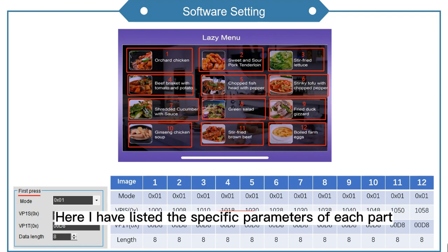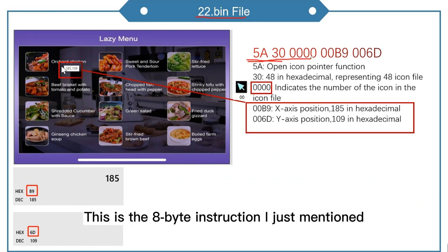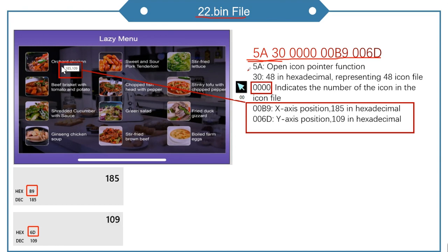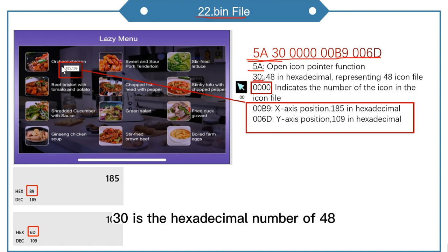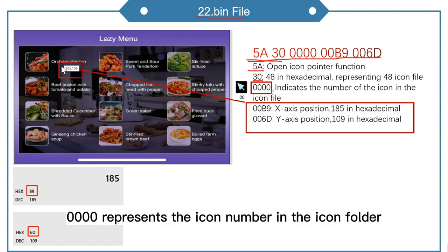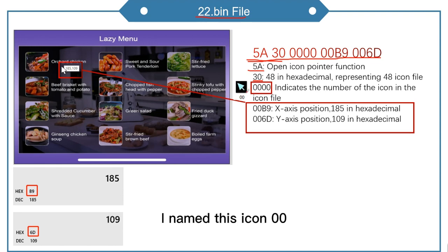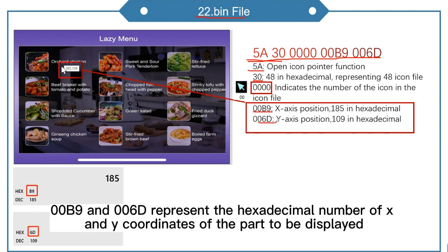Here are the specific parameters of each part. For the 22.bin file, this is the 8-byte instruction: 5A enables the pointer display function, 30 is the hexadecimal number of 48 representing the 48 icon file, 0000 represents the icon number in the icon folder — this icon is named 00, which is 0000 since it takes up two bytes. 00B9 and 006D represent the hexadecimal X and Y coordinates of the part to be displayed.